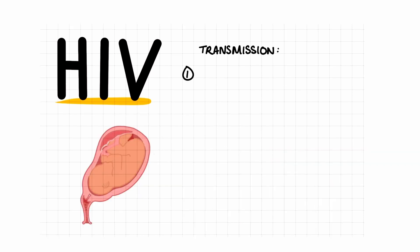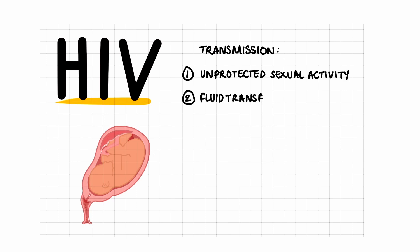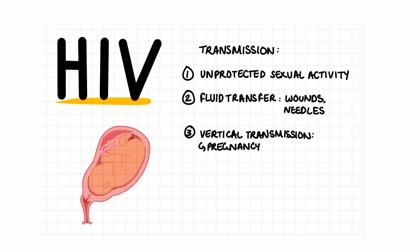The virus usually spreads through three main methods. Firstly, it can transmit through unprotected sexual activity. Secondly, any fluid can transfer the virus as well, such as open wounds, sharing needles, etc. Finally, it can be transmitted from mother to child during pregnancy, birth and breastfeeding.